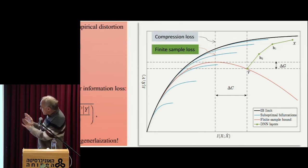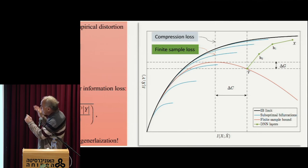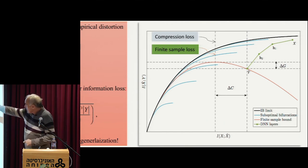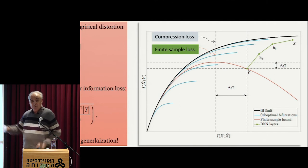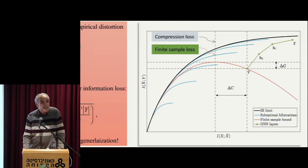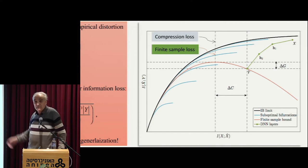We see already, just from this analysis, that there is a strong incentive — a strong reason for the network to move to the left. Because you want to be in the region of the maximum of the red curve, and not the maximum of the black curve, which essentially doesn't compress at all.